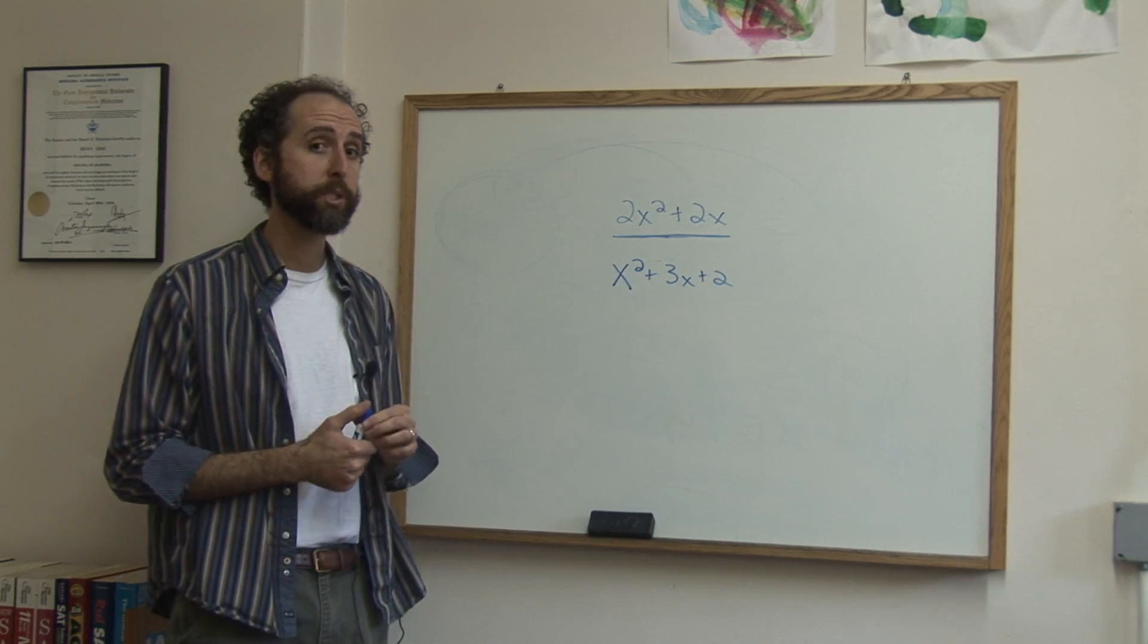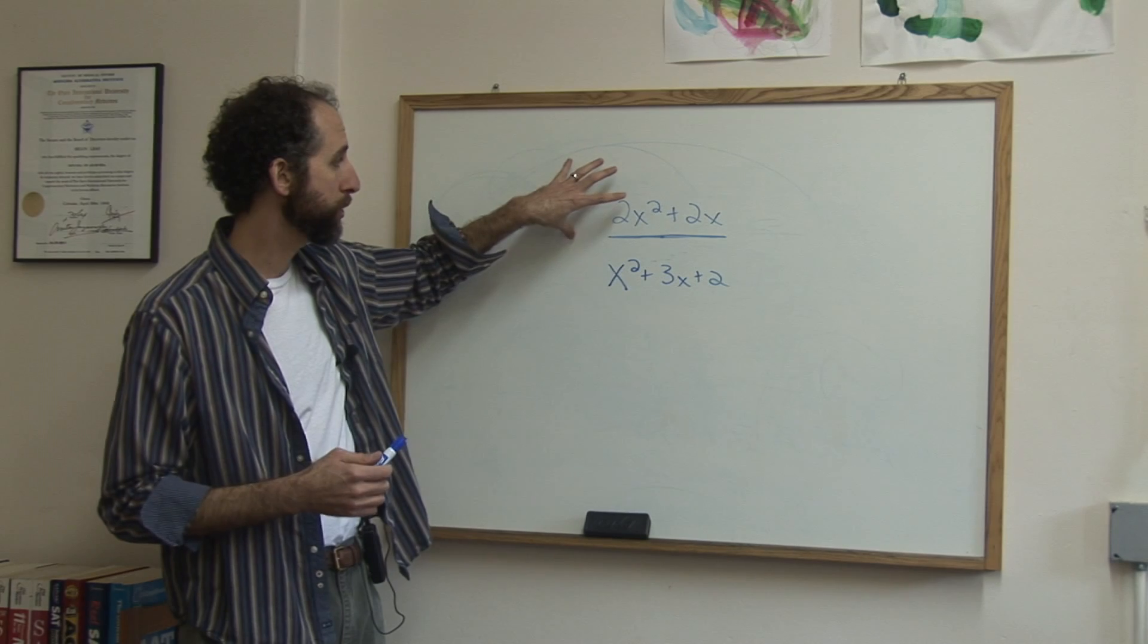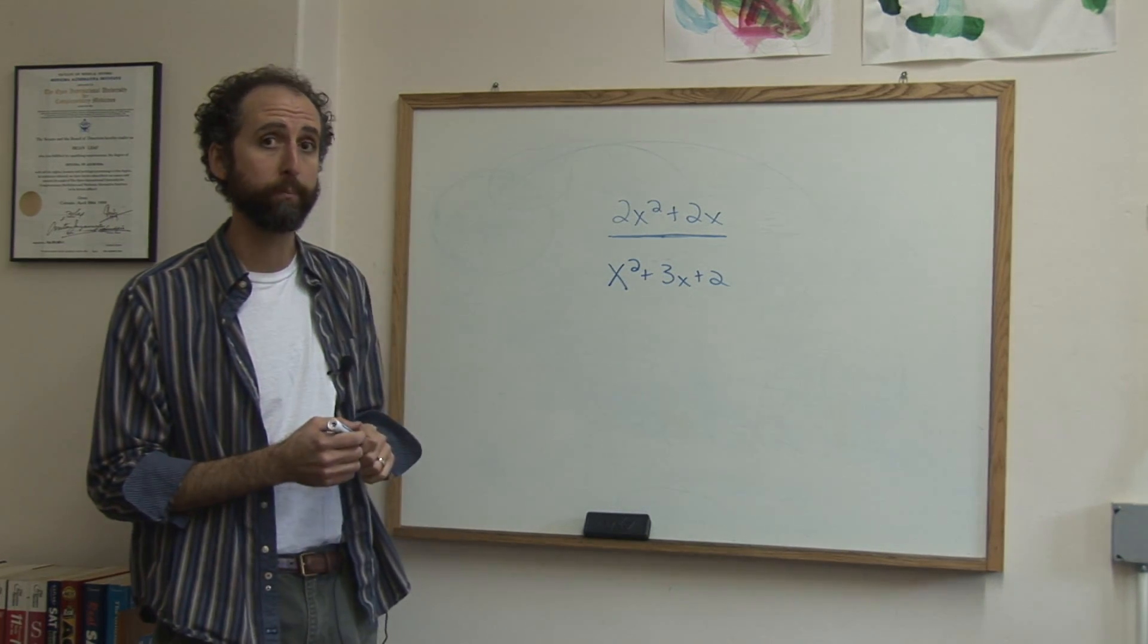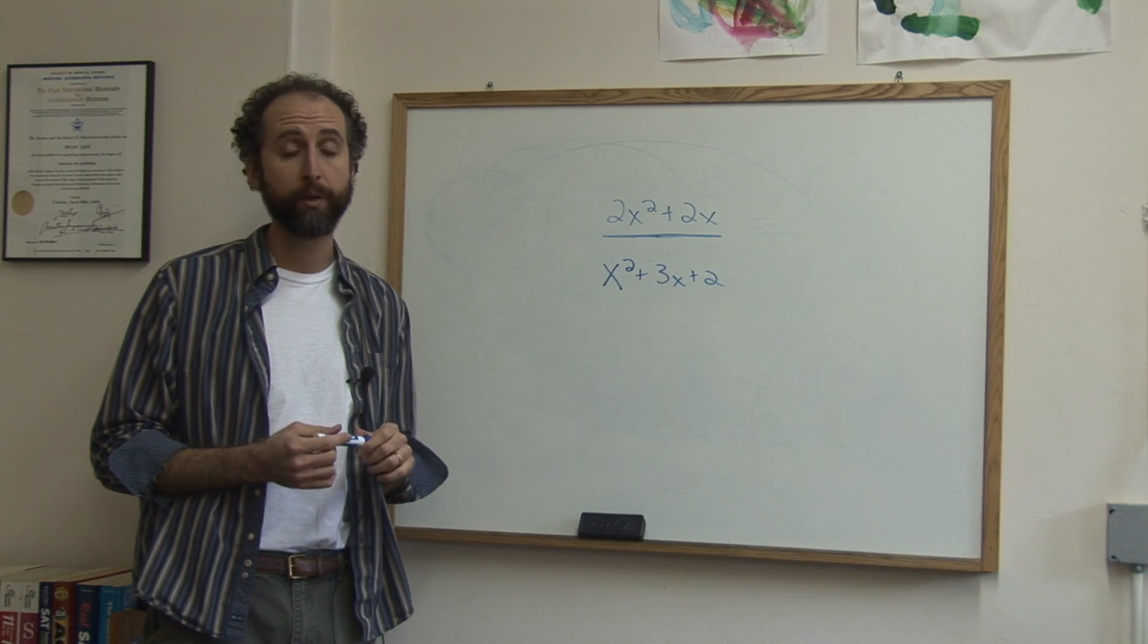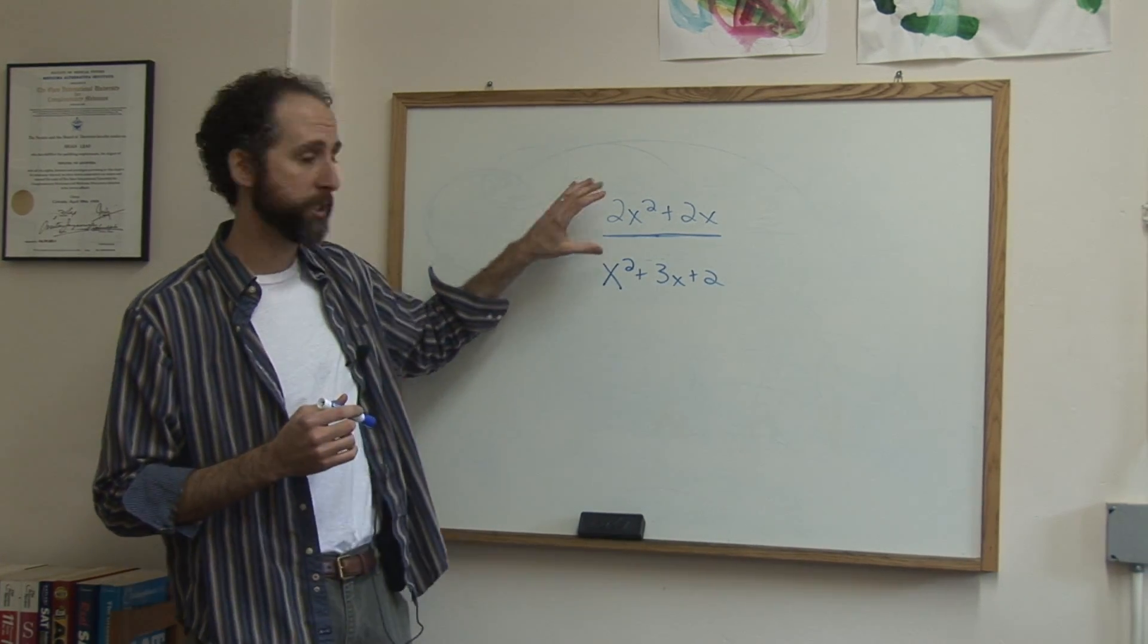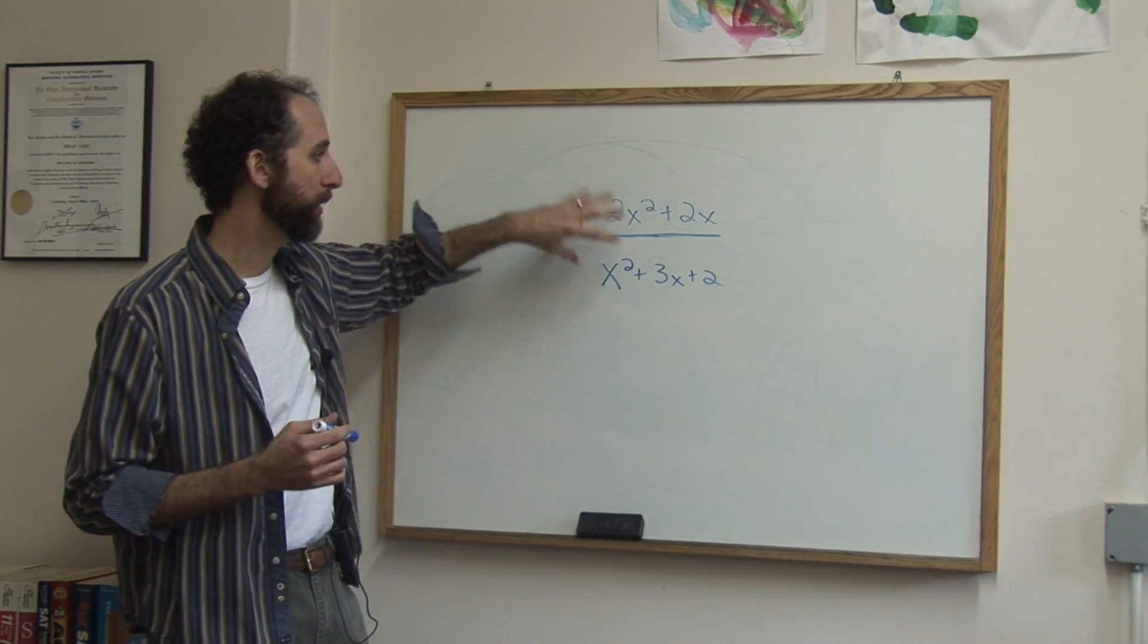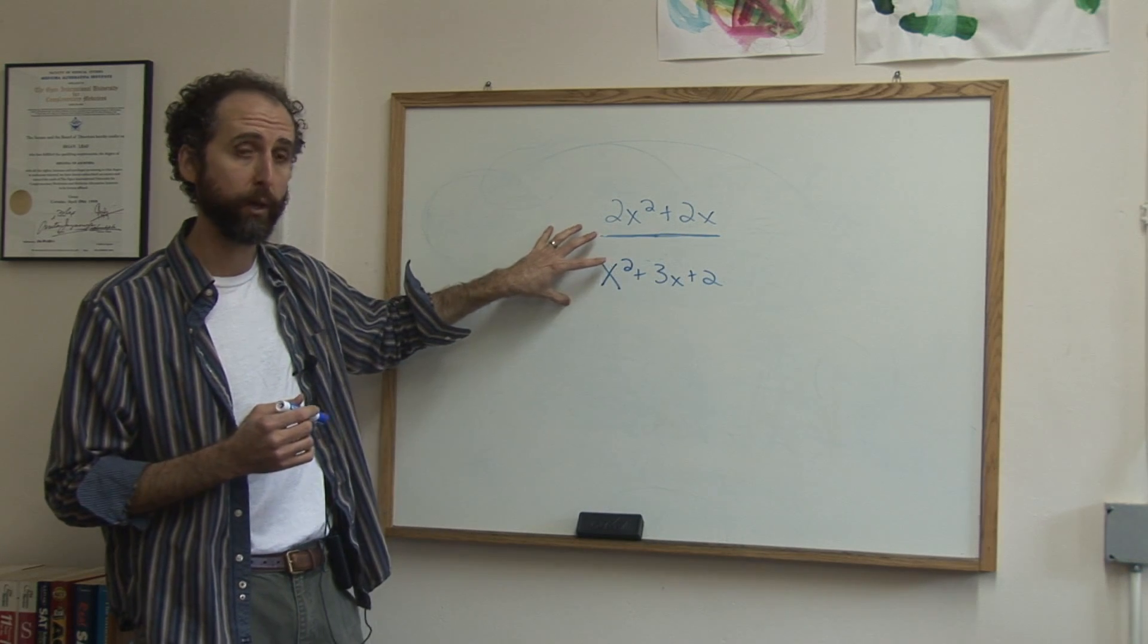But if you're looking to simplify a rational expression, what it means is just like simplifying a normal fraction, you're going to see if you can reduce something from the top and the bottom. The first step is always to factor anything out of the top and bottom that you can. So let's do that.